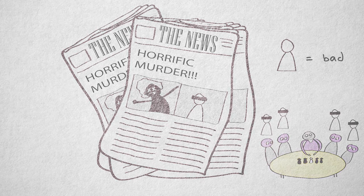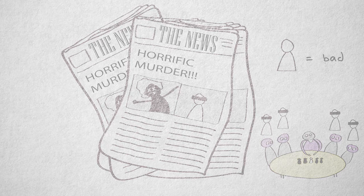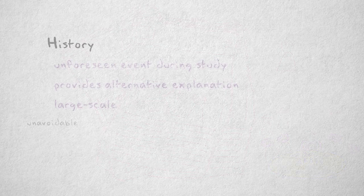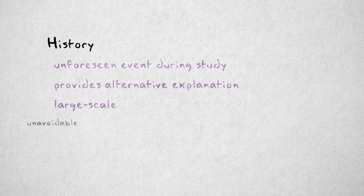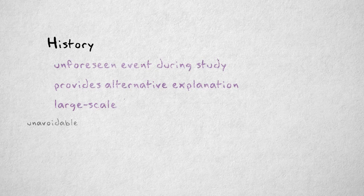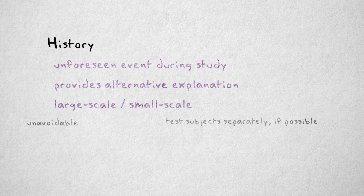The threat of history is hard to eliminate. Large-scale events can't be avoided. Small-scale events that happen during the study can be avoided, at least to some extent, by testing subjects separately, if this is possible. This way, if something goes wrong, the results of only one, or maybe a few, subjects will have to be discarded.